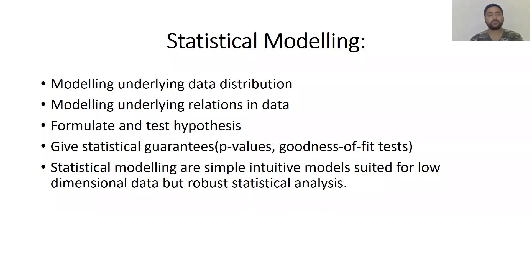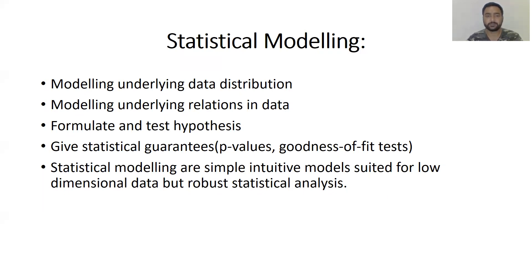Statistical modeling identifies P-values and the goodness-of-fit test. P-values are the possible values that can govern the solution for a particular problem. These are very simple models effective for low-dimensional data. When the volume of data increases, they are not as effective, but the statistical analysis remains very robust, working on exact values to produce exact outcomes.